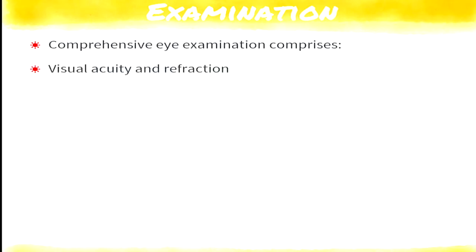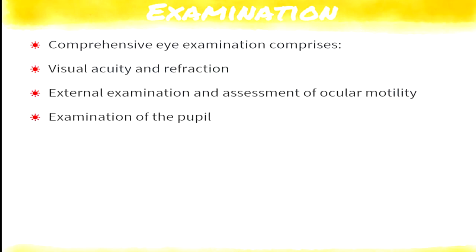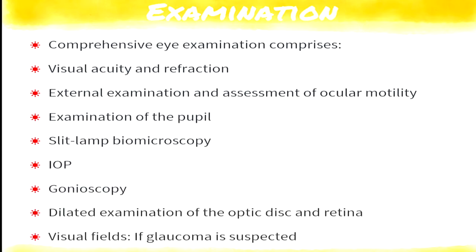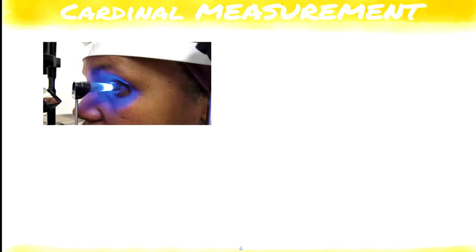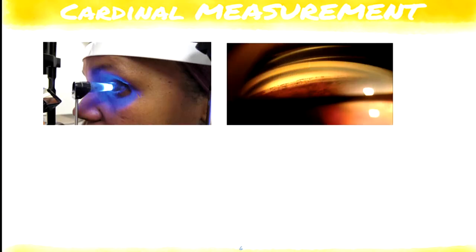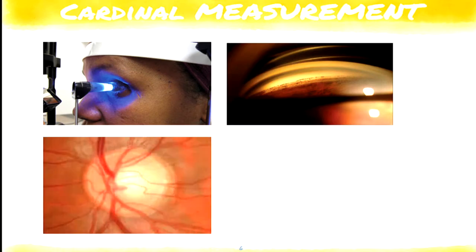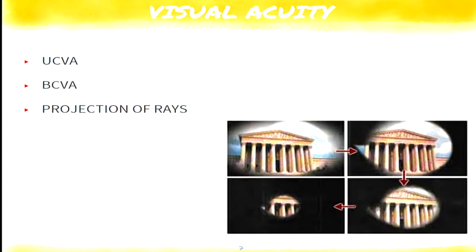Now let's go to examination. We need to do a comprehensive examination and record visual acuity. The cardinal measurements in glaucoma include: first, good applanation tonometry; second, gonioscopy to find out whether it is open-angle or closed-angle glaucoma; third, a 90D examination on slit lamp for a stereoscopic view of the disc; and finally, visual field. For visual acuity, it is not enough to measure on Snellen's chart — you need to check perception and projection of rays, because vision might be 6/6 but projection may be defective due to constriction of visual field.